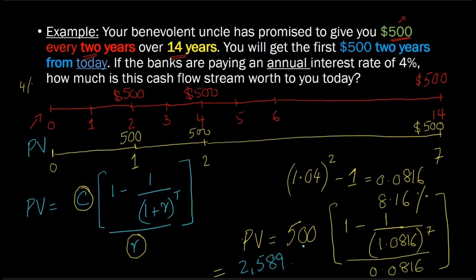This is how you deal with an infrequent annuity — more generally, an annuity in which cash flows are not occurring at annual intervals but at longer intervals, such as every two years, every three years, or every five years.